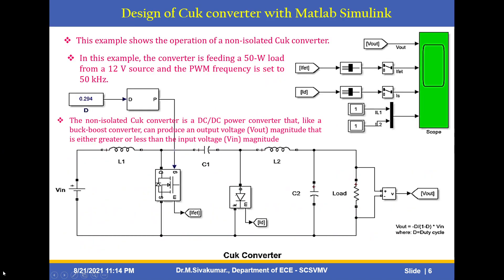Now let us see how to design the Ćuk converter with MATLAB Simulink. This Simulink diagram shows the operation of the non-isolated Ćuk converter. In this example, the converter is feeding a 50-watt load from a 12-volt source, and the PWM frequency is set to 50 kHz. The non-isolated Ćuk converter is a DC-to-DC power converter that, like a buck-boost converter, can produce an output voltage magnitude either greater or less than the input voltage.